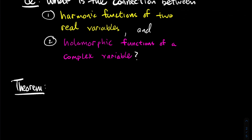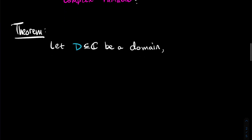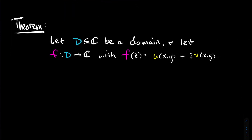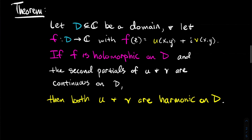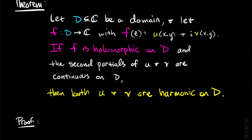Here's the theorem that tells us how they're related. Let D be a domain in the complex plane. Let F be a function of a complex variable with real part U and imaginary part V. If F is holomorphic on D and if the second partials of U and V are continuous on D — if both of these hypotheses are satisfied — then both U and V, the real and imaginary parts of F, are harmonic on D. What we're showing is: if you've got an analytic function and the second partials are nice, then each of its pieces — the real and imaginary parts — are harmonic.